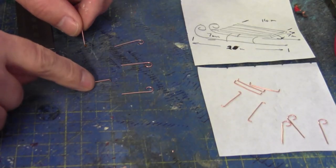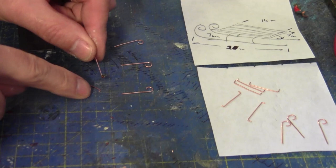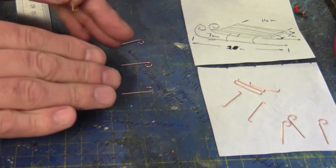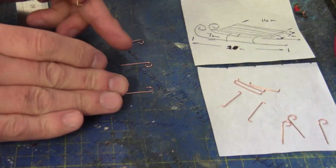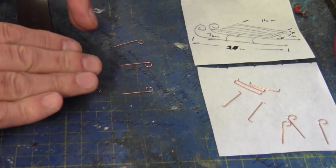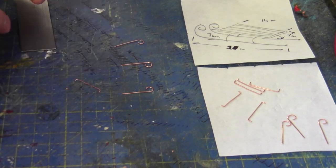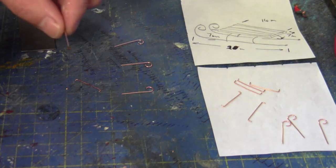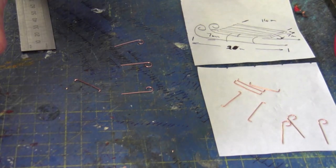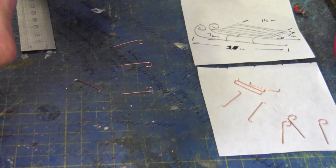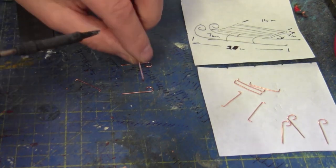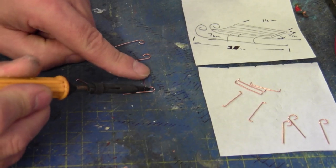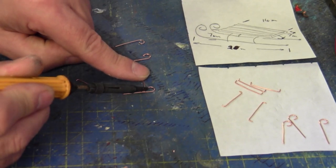Right, so before you start make sure your two supports are identical in lengthwise, otherwise when you come to fold these together you may not get them the right height so it's important that we do that. So we're going to put a little bit of flux on here and we're going to solder these together.